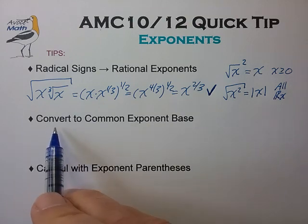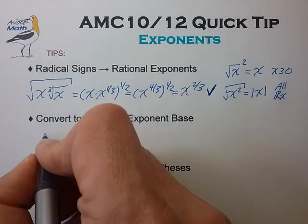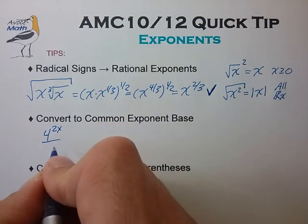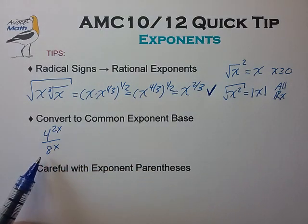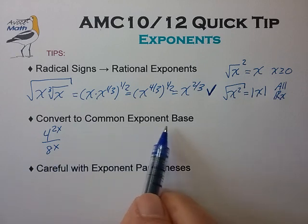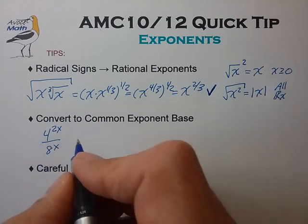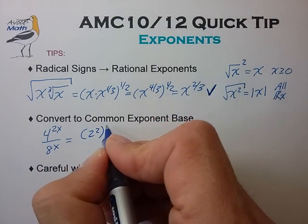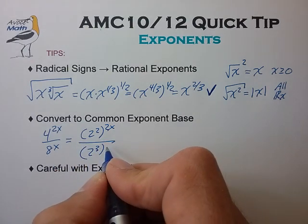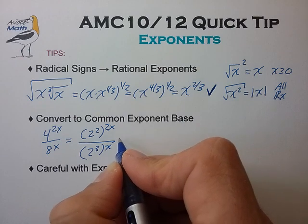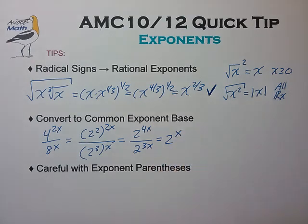Now, a second tip is to convert to a common exponent base whenever possible. So for example, you encounter the expression 4^(2x) over 8^x, you want to recognize that both 4 and 8 can be written in terms of a common exponent base. In this case, the common exponent of 2. 4 can be written as 2 squared. 8 can be written as 2 cubed. So you want to make those substitutions to simplify this expression. In this case, to 2^x.